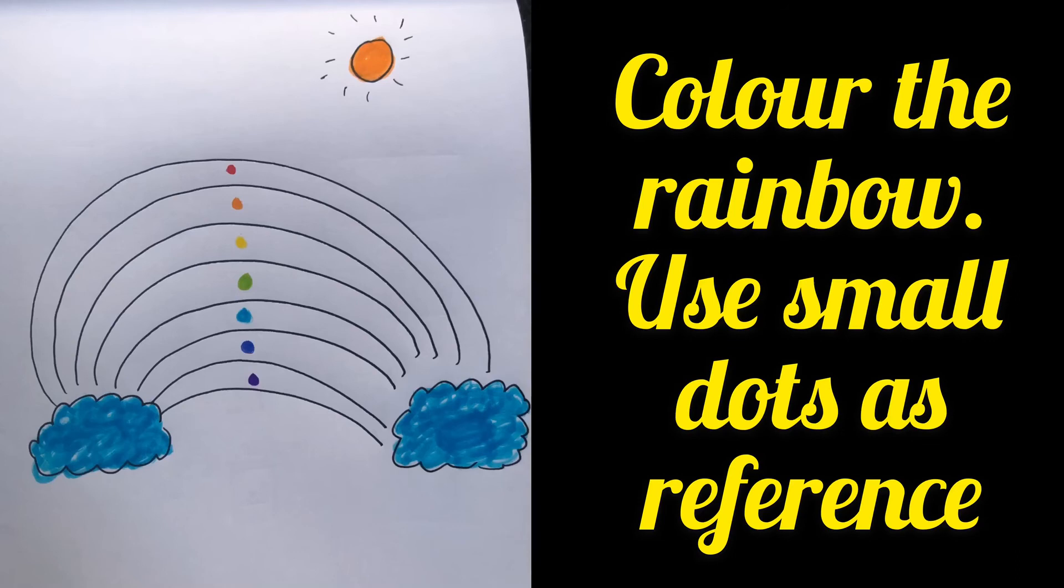Coloring a rainbow is most of the kid's favorite activity. So I had to keep a worksheet around that. I've made this worksheet a little more simpler. I've drawn a rainbow. I've even placed a dot for each color. So the kid needs to identify the color and color the rainbow using the same colors.